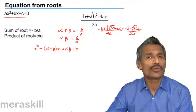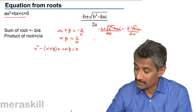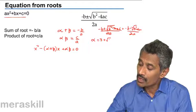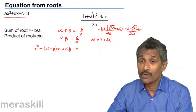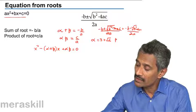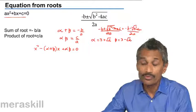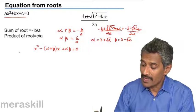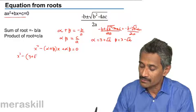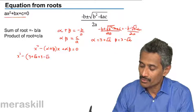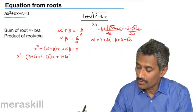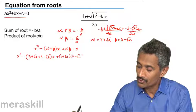Let us take an example. Suppose you want to form a quadratic equation such that one of the roots is 3 plus root 2. If one root is 3 plus root 2, the other one has to be 3 minus root 2. So the equation becomes x squared minus [(3 plus root 2) plus (3 minus root 2)] times x plus (3 plus root 2)(3 minus root 2) equals 0.